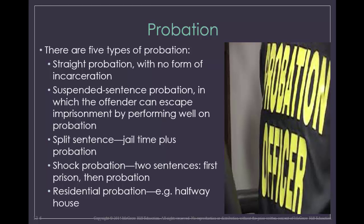Probation is administered in different ways in different jurisdictions. The federal government administers its own probation system under the administrative office of the courts. Some states administer probation at the state level, others at the local level. But no matter who is overseeing your probation sentence, there are a few types of probation that can occur. You could be sentenced only to probation and that's all the punishment that you will receive. You can also have a suspended sentence — this is similar to diversion in that if you comply with all of the court-ordered requirements, then the judge will suspend your incarceration sentence. Split sentences occur when you go to jail or prison and then are sentenced to probation post-release.